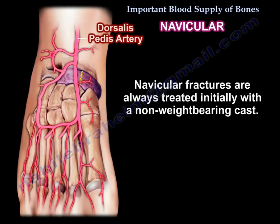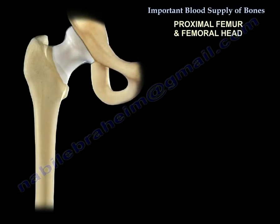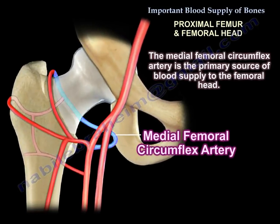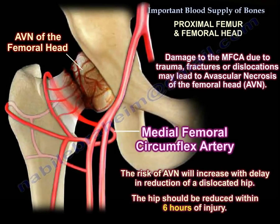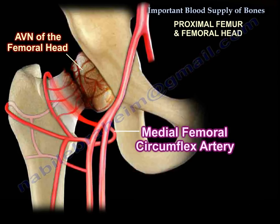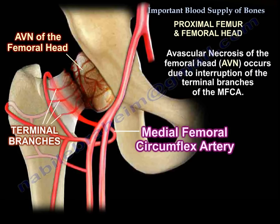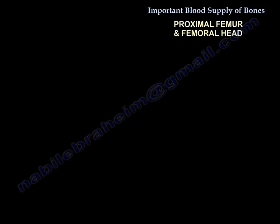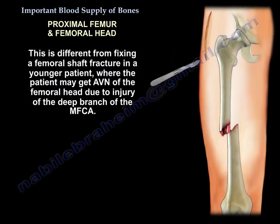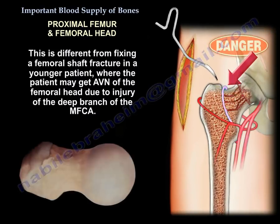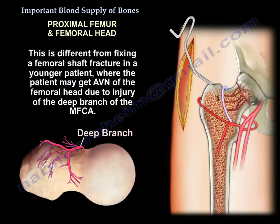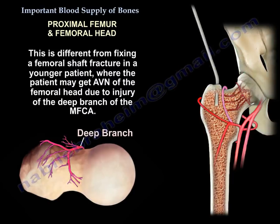Navicular fractures are always treated initially with a non-weight-bearing cast. Regarding the vascularity of the proximal femur and femoral head, the medial femoral circumflex artery is the primary source of blood supply to the femoral head. Damage to this artery due to trauma, fractures, or dislocation may lead to avascular necrosis of the femoral head through interruption of its terminal branches. In younger patients with femoral fractures, AVN may result from injury to the deep branch of the medial femoral circumflex artery.